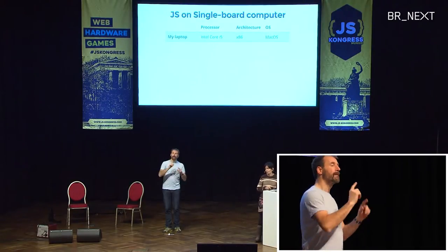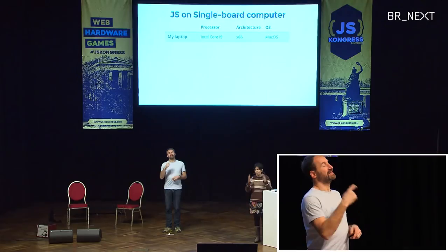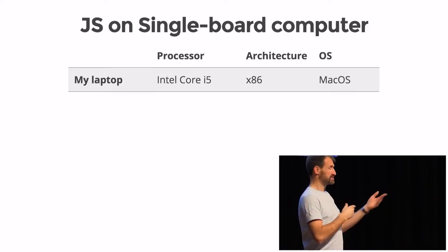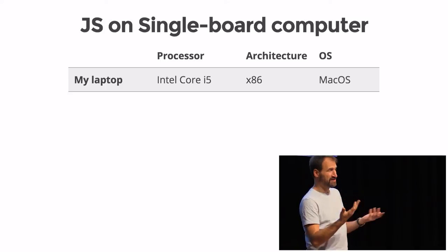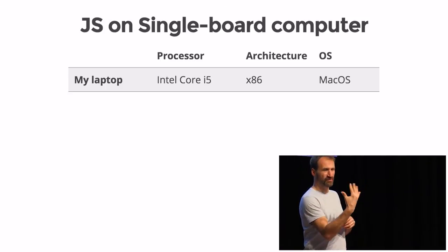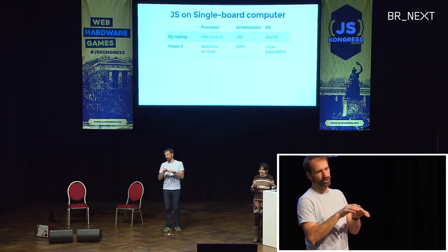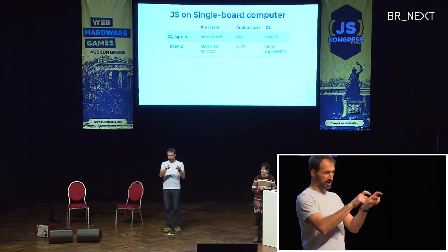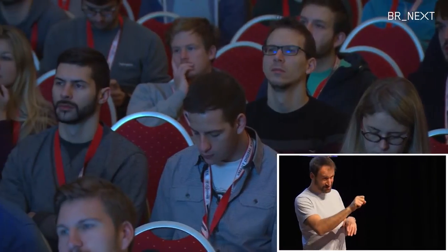Let's start with single-board computers using a mental model we're all familiar with: JavaScript running on our laptop. My MacBook has an Intel Core i5 processor, an x86 instruction set architecture, and runs macOS. Now let's bring on single-board computers. The Tesla 2 is a single-board computer with a MediaTek processor, a MIPS architecture, and runs Linux — OpenWRT specifically.